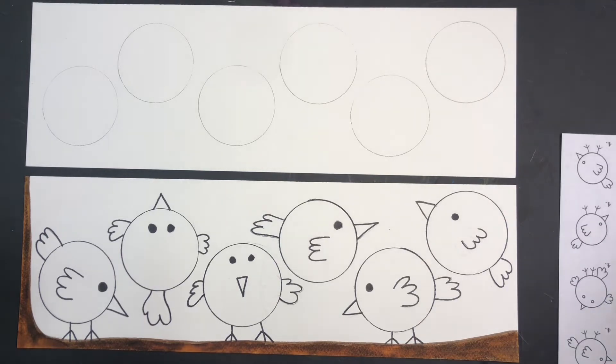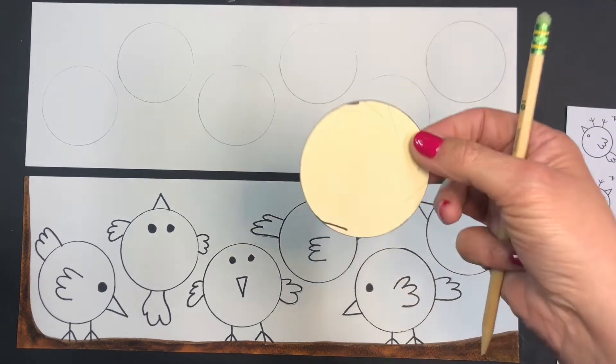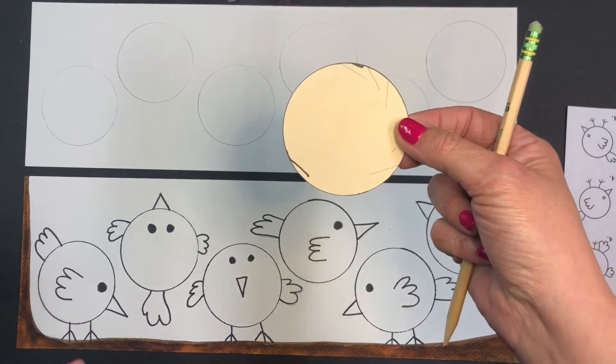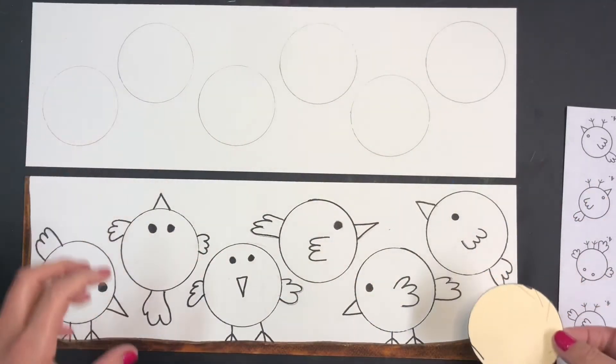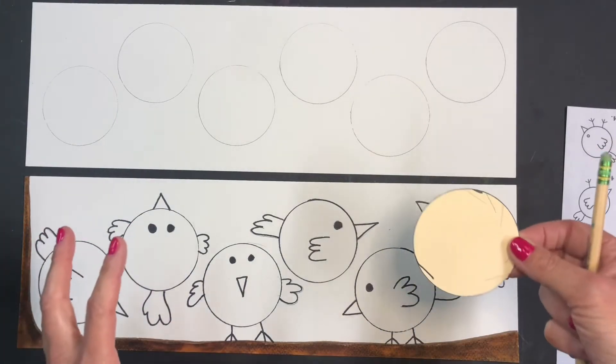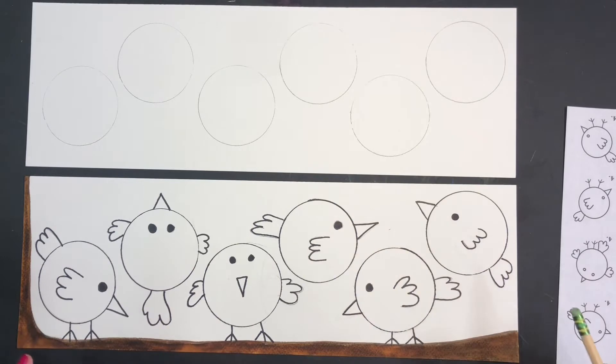And if you don't have a circle stencil at home, you can just use a cup or a small lid. But you want to try to have a very horizontal surface so that we can fit six birds on our branch.